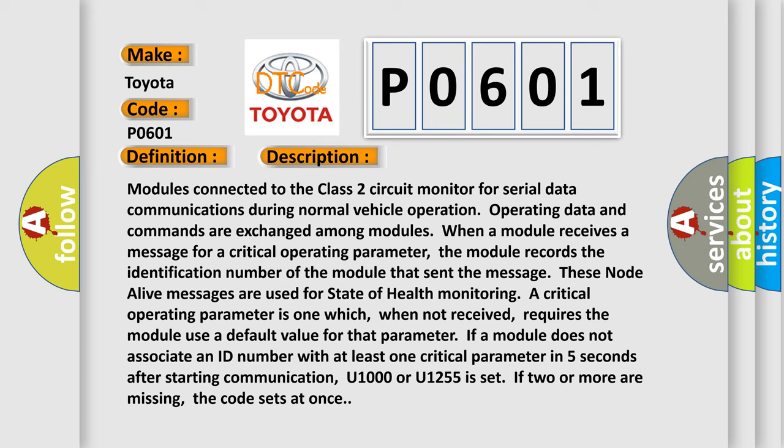If a module does not associate an ID number with at least one critical parameter in five seconds after starting communication, U1000 or U1255 is set. If two or more are missing, the code sets at once.